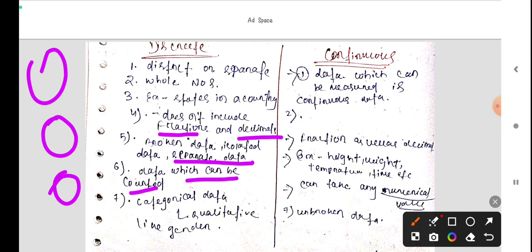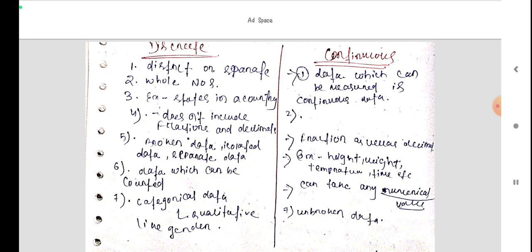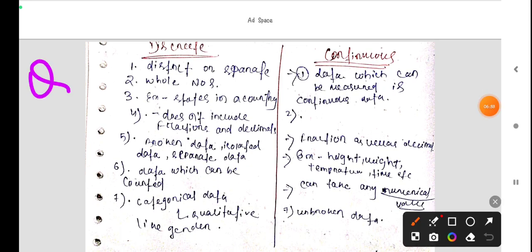Data which can be counted. This is categorical. So it is qualitative. Qualitative means if we have qualitative, it is not quantity or number based. We categorize it. Qualitative is category based.